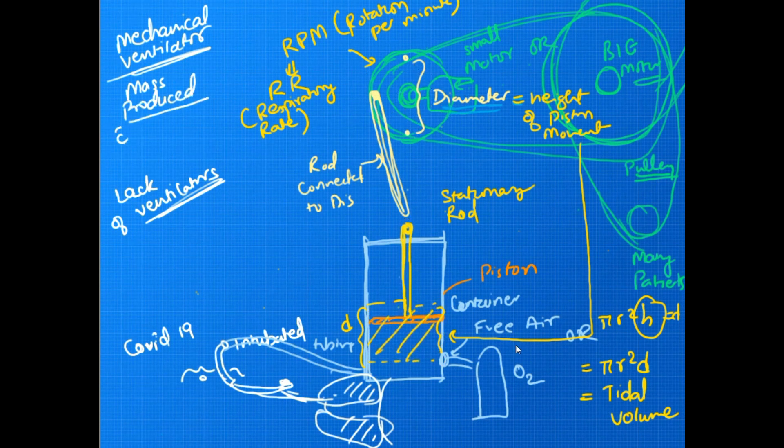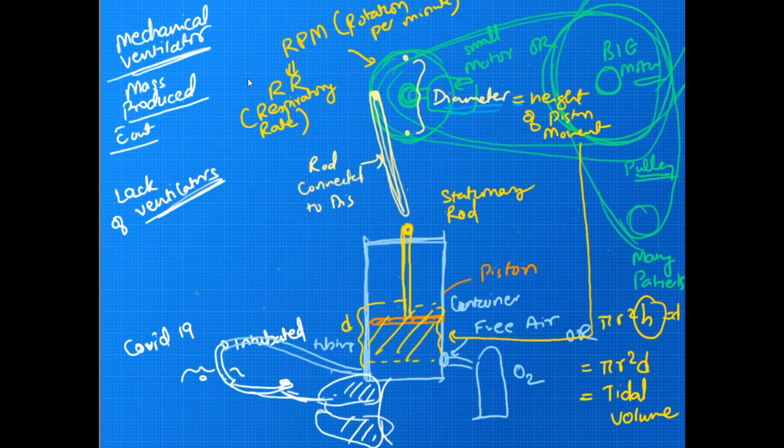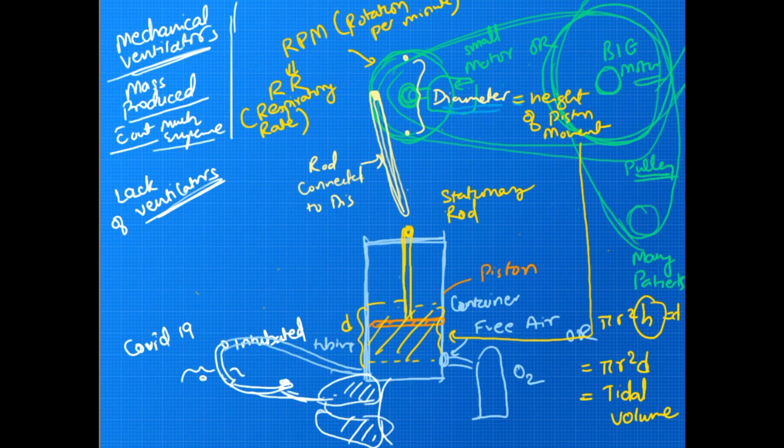The third variable would be the oxygen saturation, which will be difficult in this scenario because most of the time it's like a computerized system. But what we can manually do is have the patient's pulse oximeter attached to the patient and see if the blood oxygenation is falling.